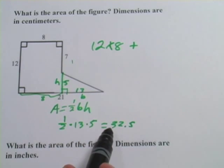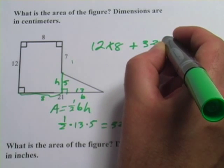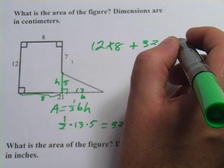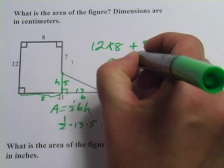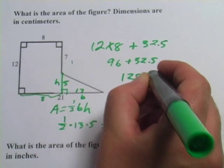And then we just add that to the area we got for the rectangle. 12 times 8 is 96, plus 32.5, and I get 128.5.